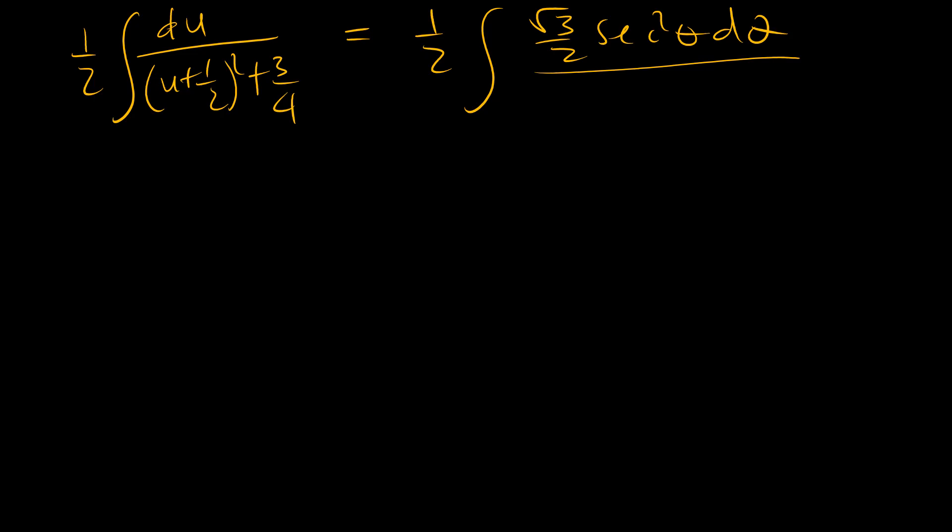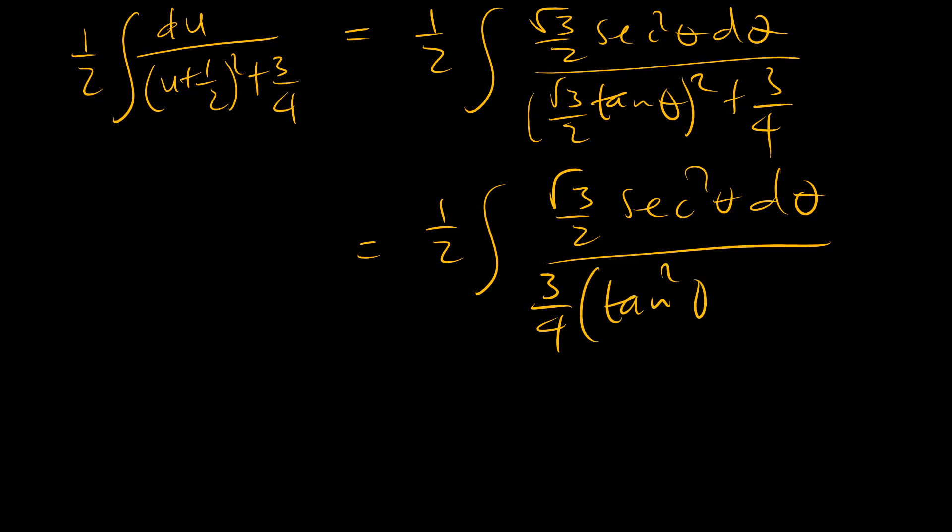And then, u plus a half becomes root 3 over 2 tan theta, and then we square it. So, this becomes a half root 3 over 2 sec squared theta d theta. And now, we can pull 3 quarter out, and we have tan squared theta plus 1. And since tan squared theta plus 1 is the same as sec squared theta, this and that cancels.